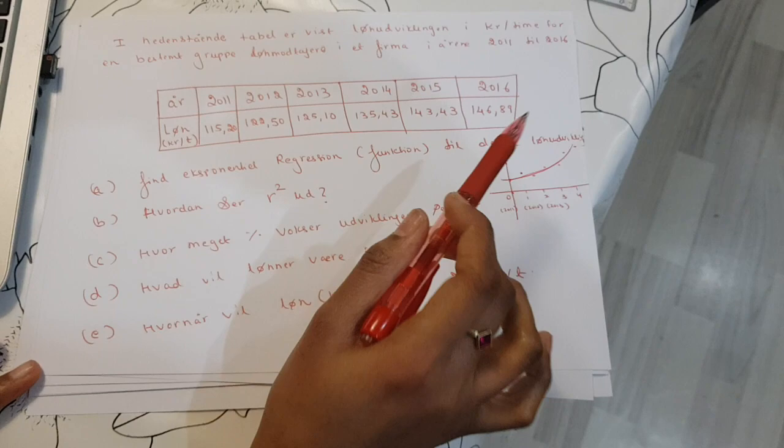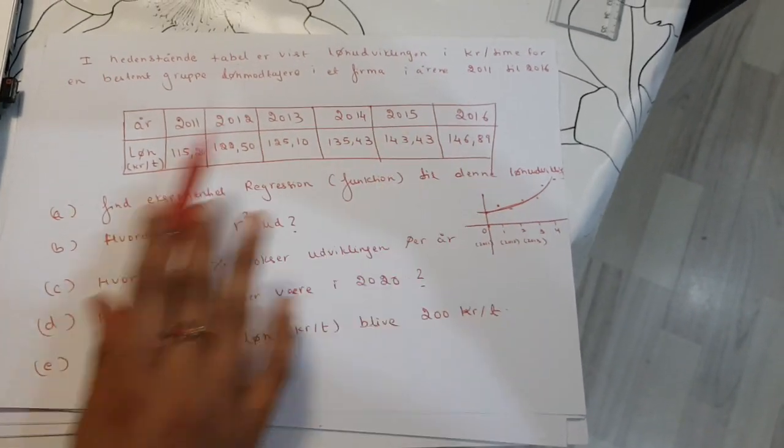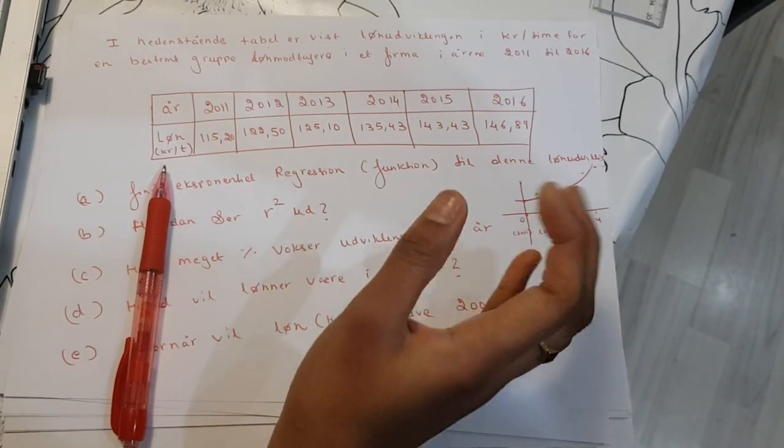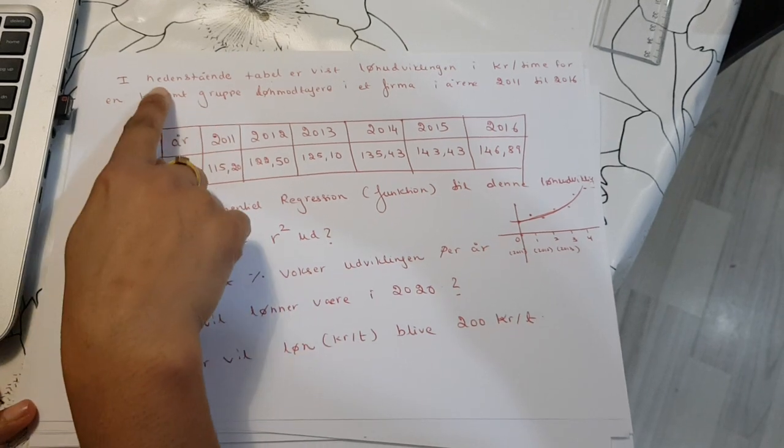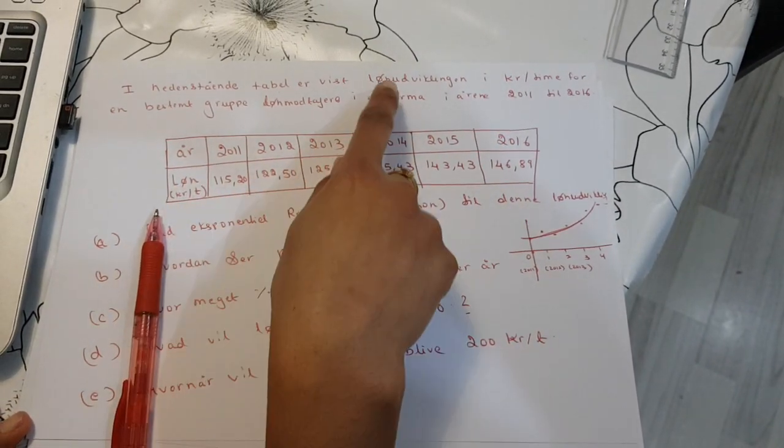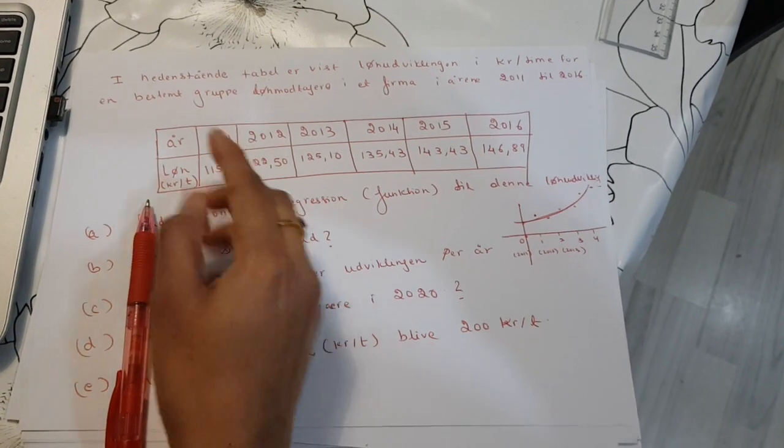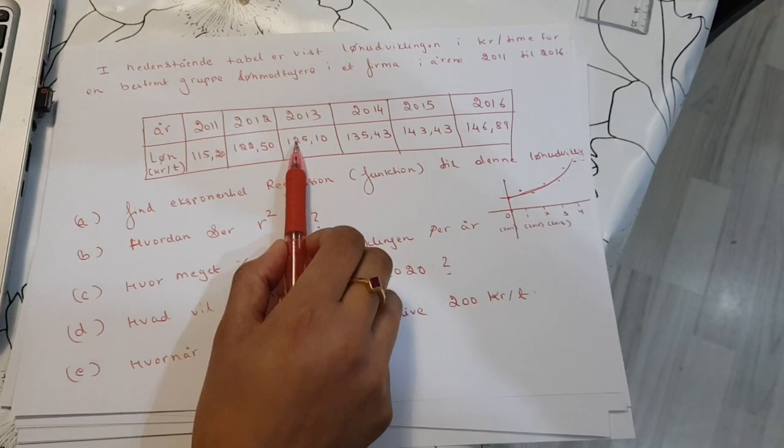So we have our exponential regression and the fact is that it is very important. The first thing we need to concentrate on is when we have an evolution, maybe it is not perfect for an exponential function. For example, let us see if we look at the data, it is an evolution of kroner per time, which means kroner per time, in six years. So maybe it is an exponential function, but maybe it is not.